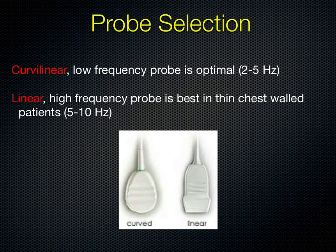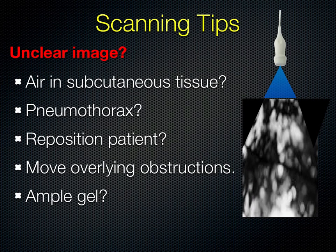A linear probe is best for seeing something superficial when you need a great deal of detail — for instance, looking at the pleural line for evaluation of pneumothorax, or to guide procedures in real time such as thoracentesis. If you're not getting a good image initially, ask yourself: is there air in the way — between the probe and the patient from insufficient gel, within the skin, or within the structure itself? Does the patient need repositioning? Are there overlying obstructions like bandages or EKG leads that need to be removed?